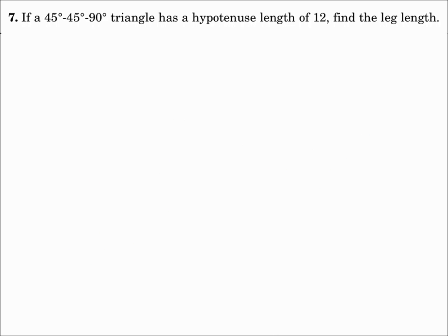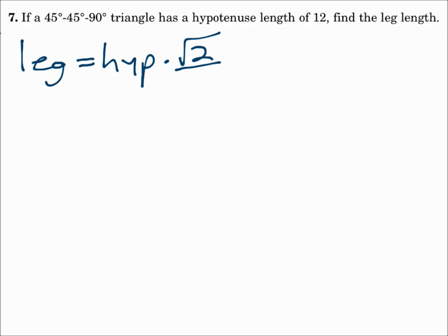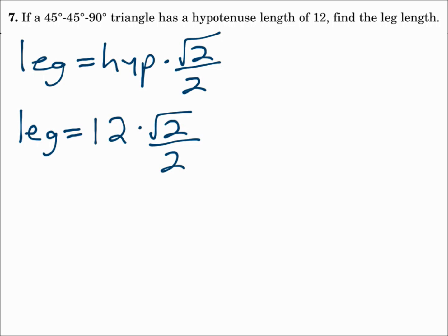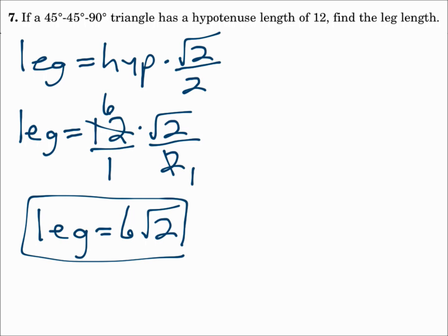Number 7. If a 45-45-90 triangle has a hypotenuse length of 12, find the leg length. Since we're looking for the leg, use the leg equals formula: leg equals hypotenuse times the square root of 2 over 2. The hypotenuse is 12, so the leg equals 12 times √2 over 2. Put 12 over 1 and reduce — 12 and 2 are divisible by 2, so 12 becomes 6 and 2 becomes 1 — the leg equals 6 times the square root of 2. In a 45-45-90 triangle, the leg equals the hypotenuse times √2 over 2, and the hypotenuse equals the leg times √2.